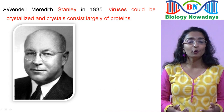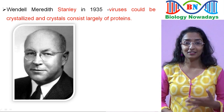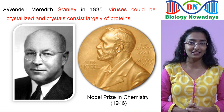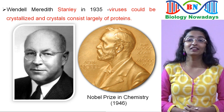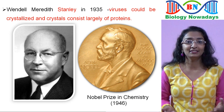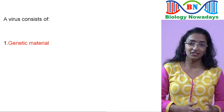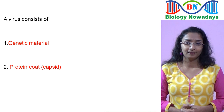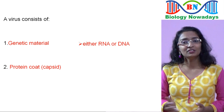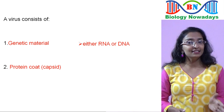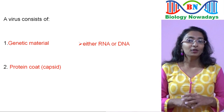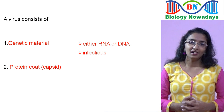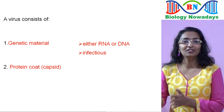Stanley in 1935 showed that viruses could be crystallized and the crystals consist largely of proteins. For this work, he was awarded the Nobel Prize in Chemistry in 1946. Since the discovery of the electron microscope in the 1930s, viruses have been studied in great detail. A virus consists of genetic material covered in a protein coat. The genetic material — either RNA or DNA — stores the genetic information. No virus contains both RNA and DNA. The genetic material is infectious, meaning it is responsible for causing infection in a host cell.